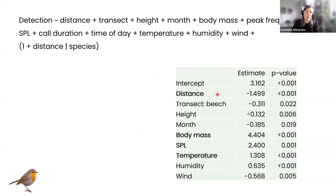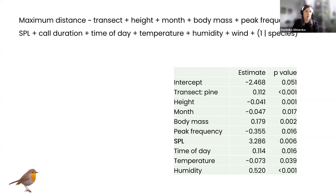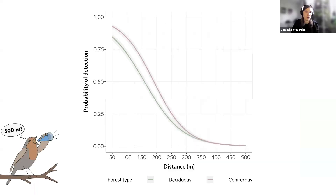Here we are investigating what influenced whether the species was detected or not — I'm showing only the significant results because otherwise the table would be too large. You can see that the detection number decreased with distance, but more detections were recorded for larger species that were also louder, and at higher temperatures. The second model looks very similar — investigating what factors influenced the maximum distance we got for each species — and here the most significant effect was for loud species: louder species obtained longer detection distances.